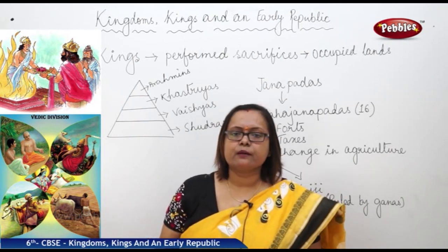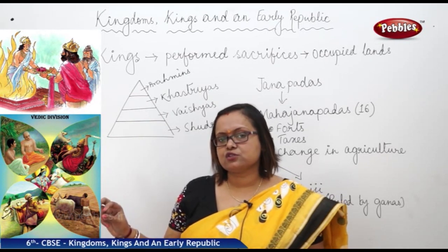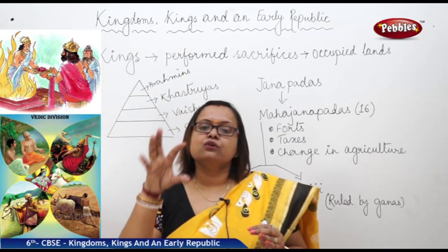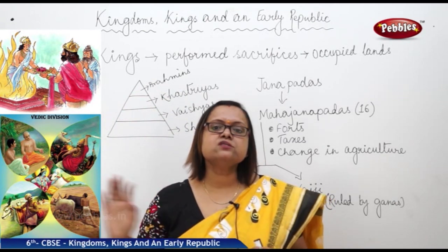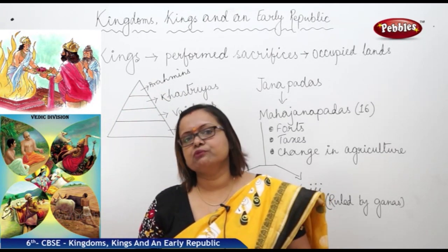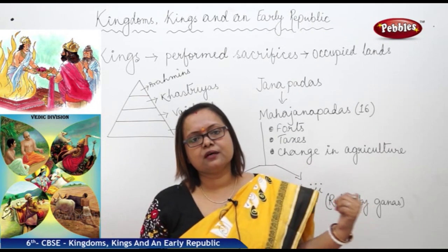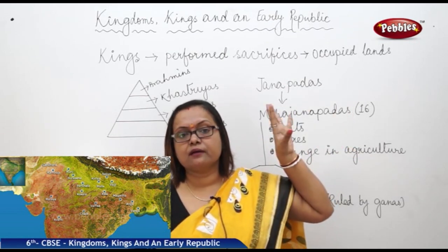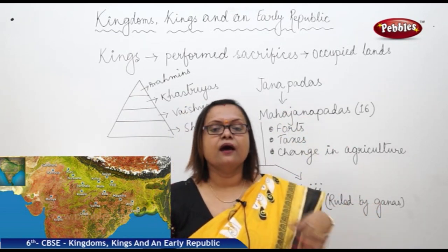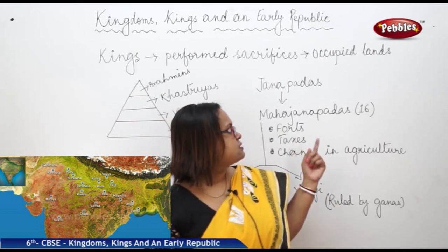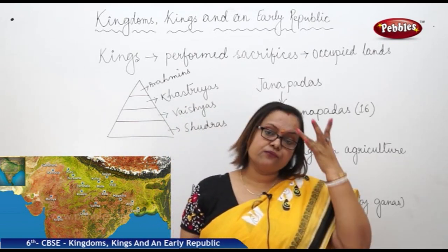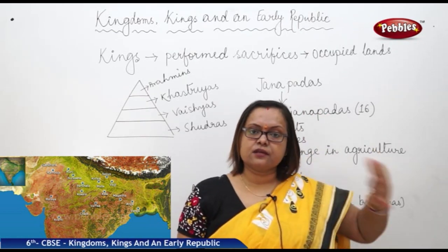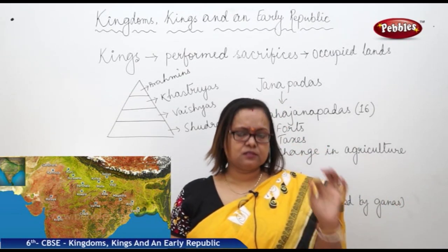To give a simple example — we have many small villages, and these villages make a district. Many districts make a state where we have a chief minister to rule. Similarly, Janapadas turn into Mahajanapadas — where many Janapadas make a Mahajanapada, with a big powerful king as the ruler controlling the entire area. There were 16 Mahajanapadas, which became really powerful and started controlling entire north and central India, and some few parts of south India.